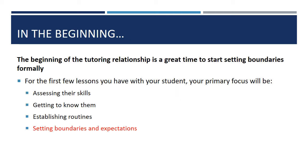The beginning of your tutoring relationship is a great time to start setting boundaries formally. In your first few lessons, you'll be assessing their language skills, getting to know them, establishing routines, and setting boundaries and expectations. We help with that by offering a student contract that you'll go over in your first session, which clearly outlines the expectations of the tutor program. We like to remind students about these since it may have been a long time since they were first introduced to the program and put on the wait list, so hopefully the contract gives both parties a chance to fully understand program boundaries and expectations.